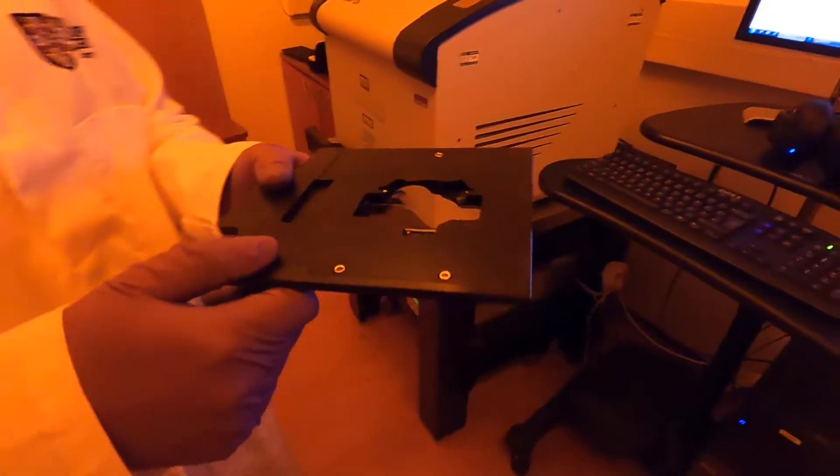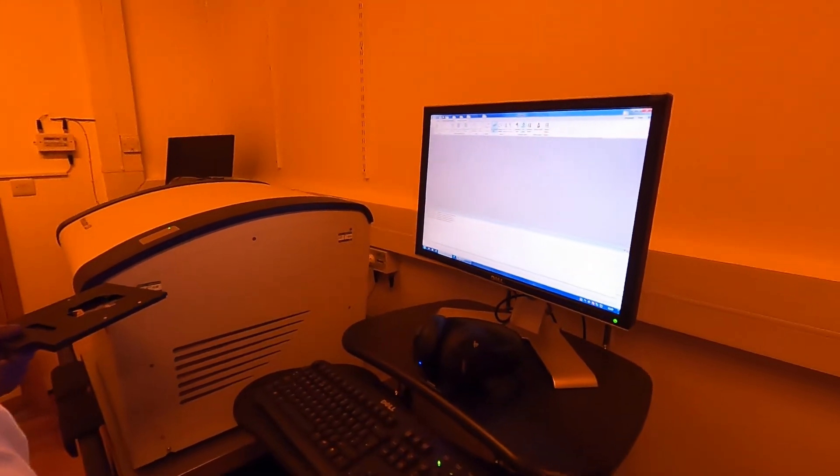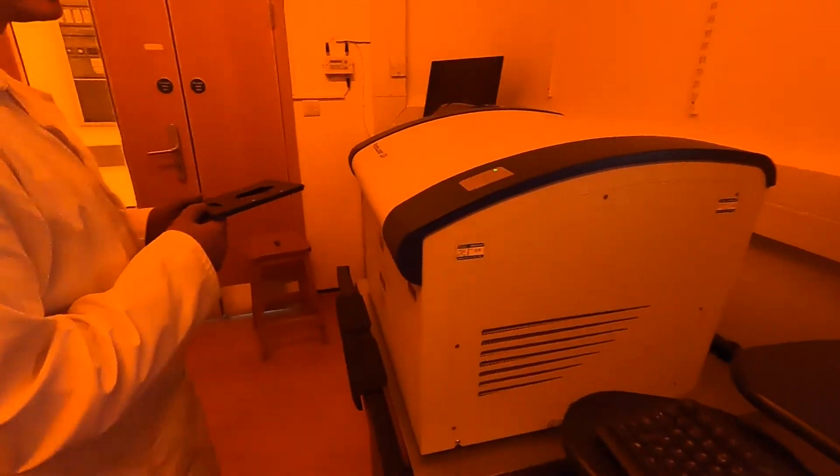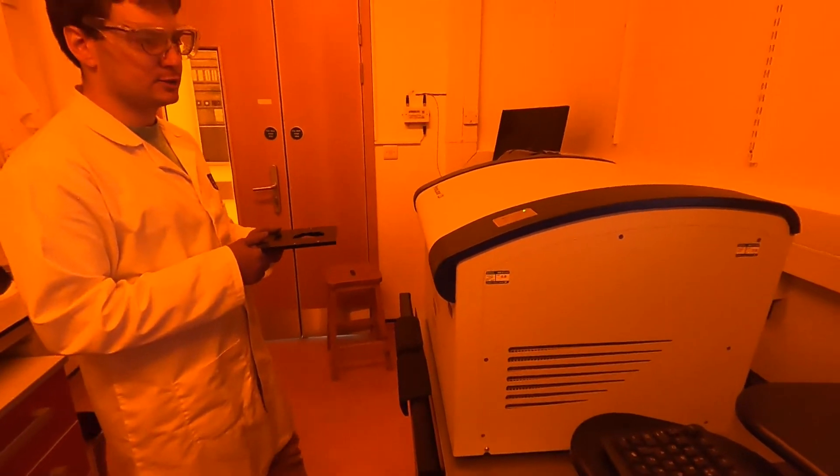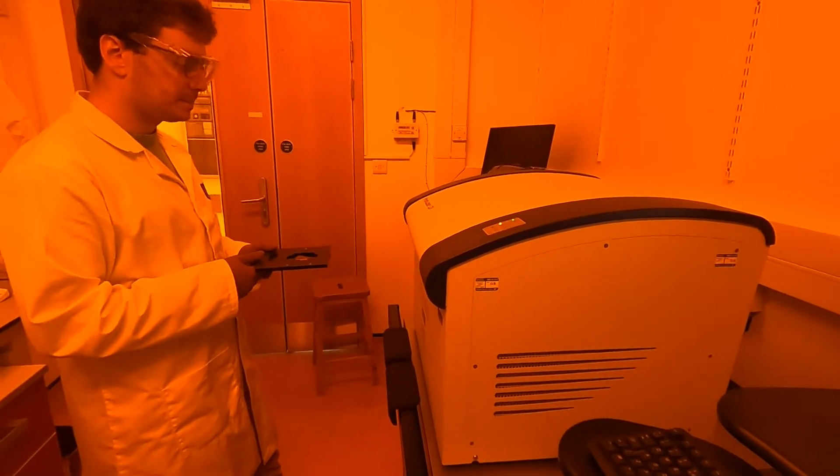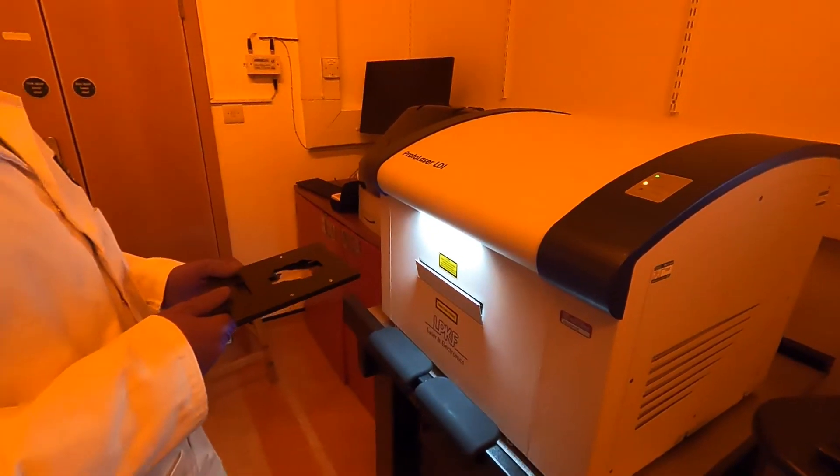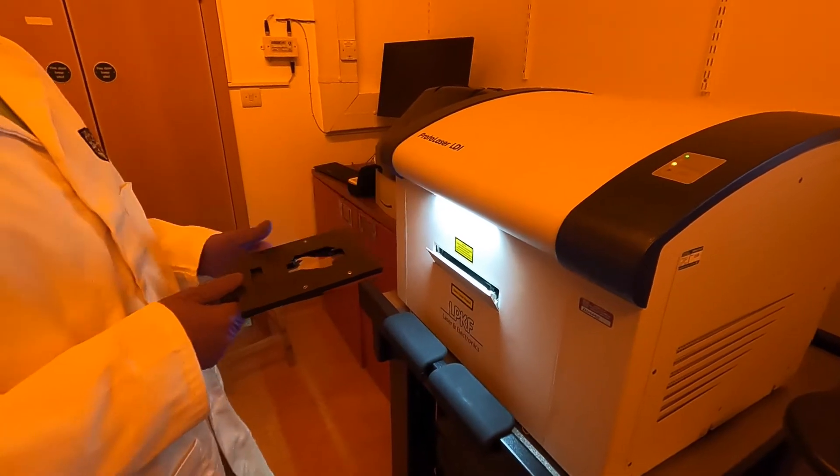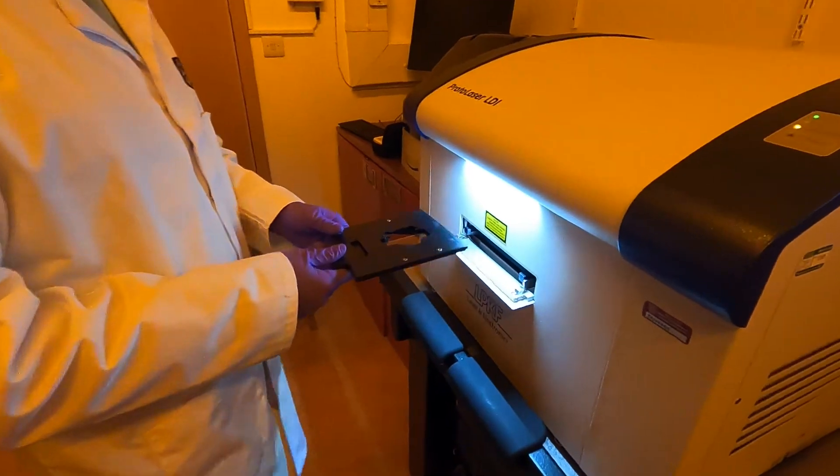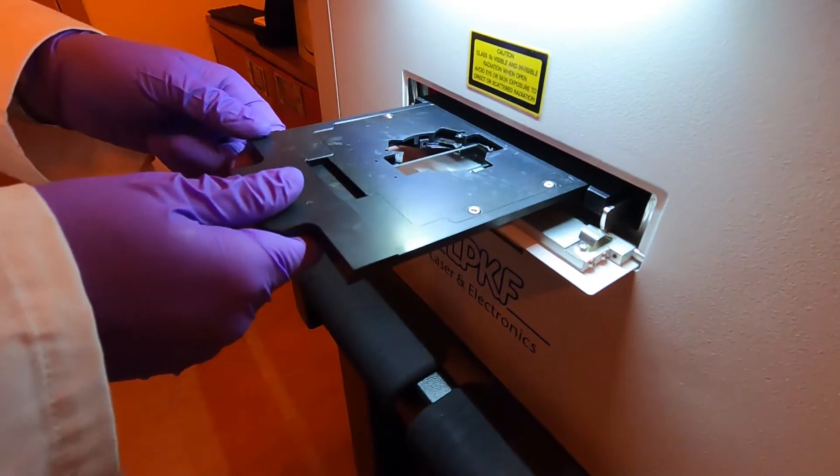We are now ready to put the sample in the LaserWriter. From the software I'm going to eject the sample tray. This usually takes 10 seconds to a minute depending on what configuration the machine is in. I'll also turn on this light. Apparently this light has been designed so it doesn't have any UV components that can expose the photoresist. Once this is completely open you can line up the top of the plate with the top edge of the holder.